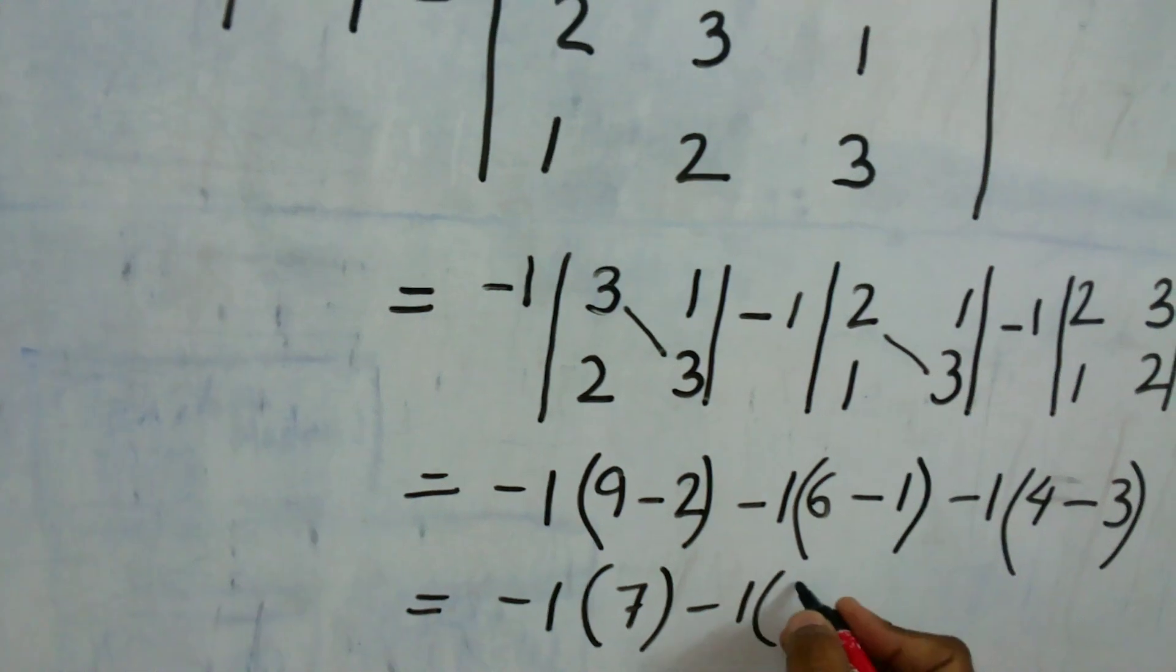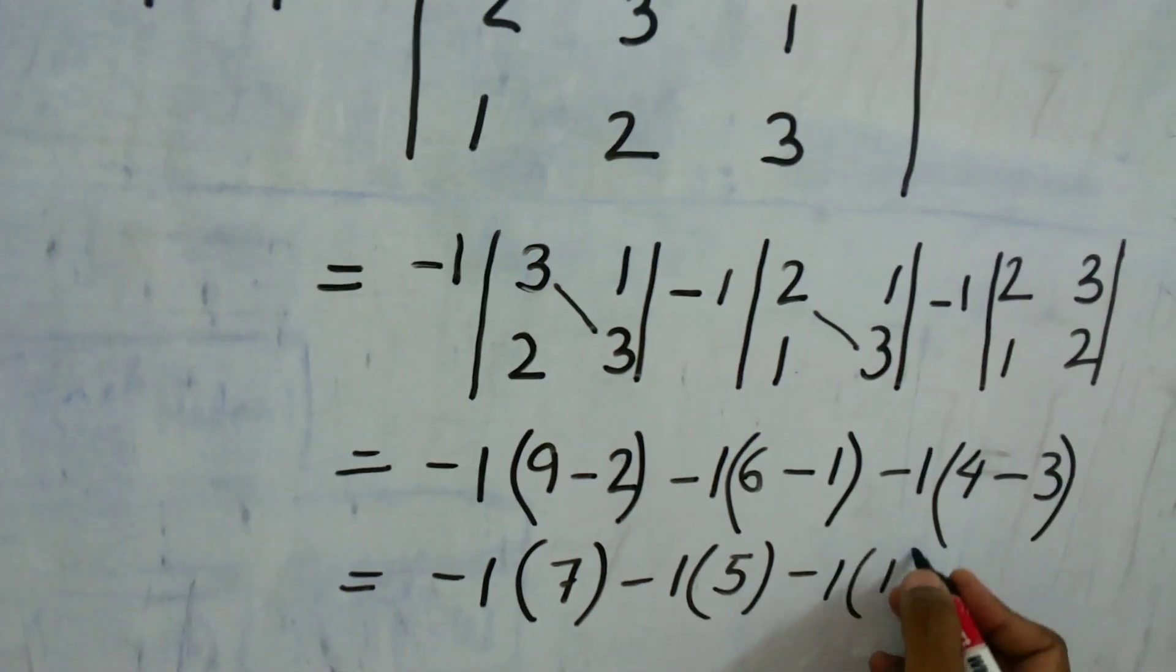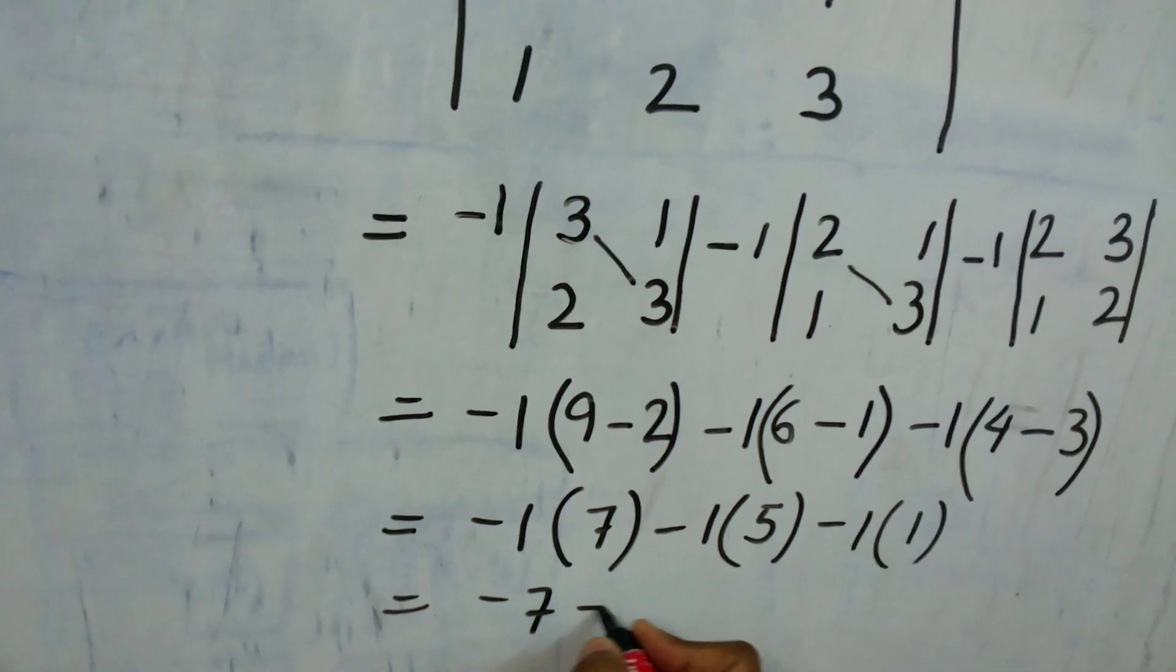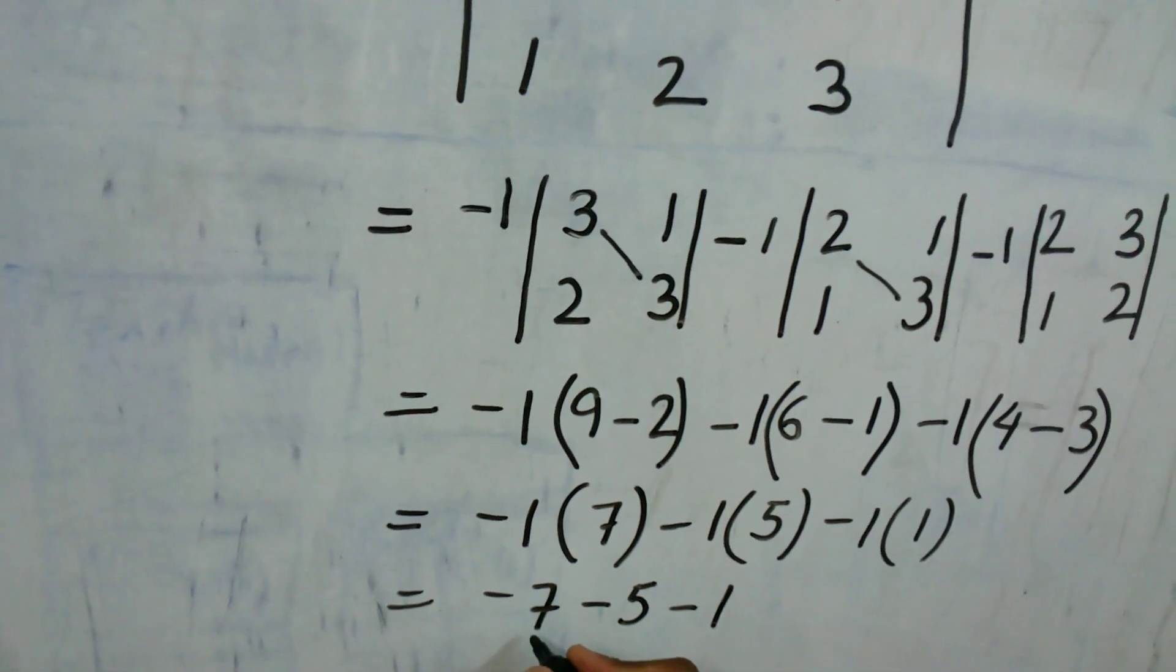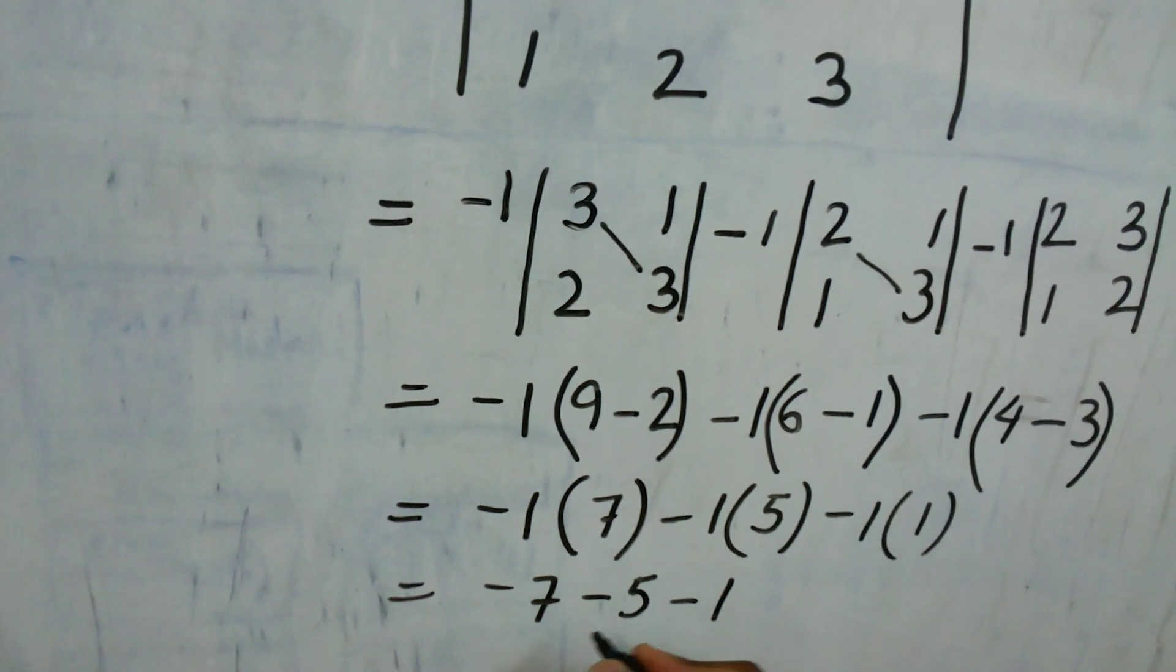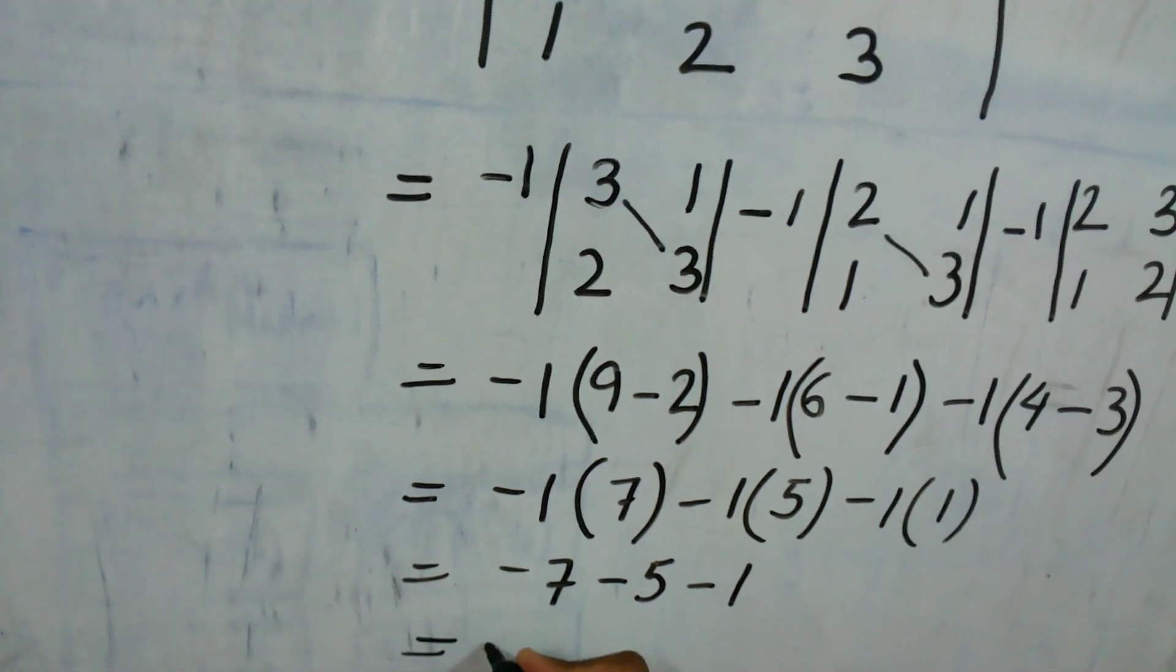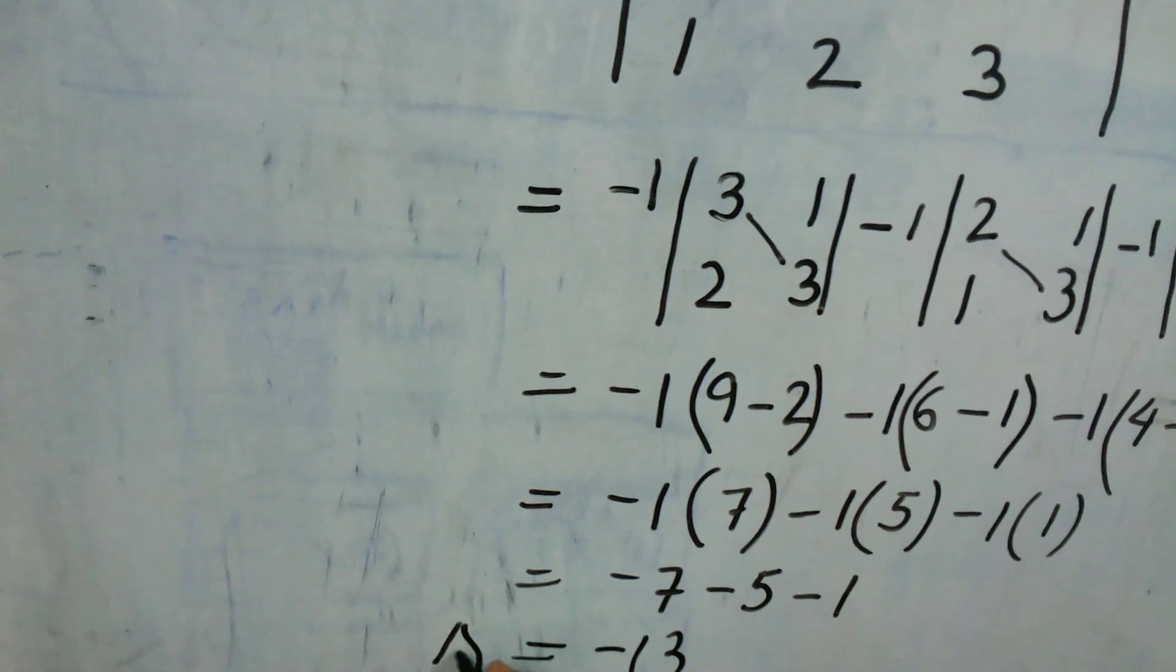So this will be equal to minus 1 minus 1 into 7 minus 1 into 5 minus 1. So this will be minus 7 minus 5 and minus 1. That is minus 7 minus 5 that will be minus 12 and minus 1, that is equal to minus 13. So determinant of A is equal to minus 13.